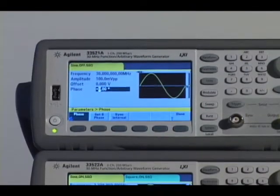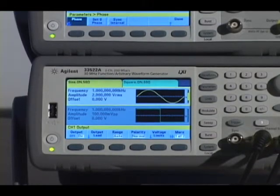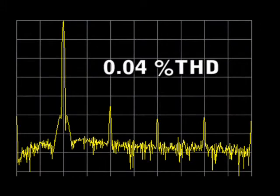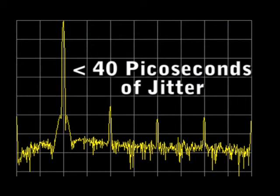The single channel 33521A and the two channel 33522A have the highest signal fidelity in their class, with 0.04% total harmonic distortion, excellent amplitude flatness, and less than 40 picoseconds of jitter.